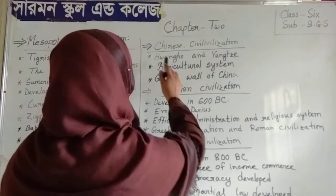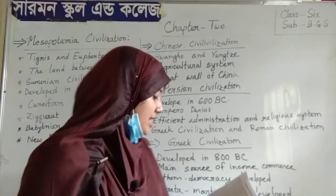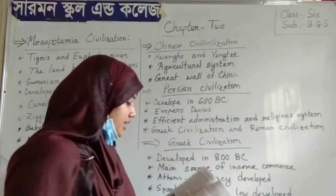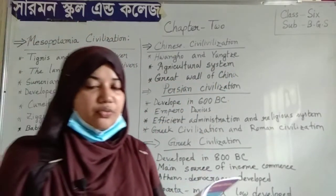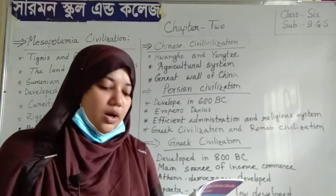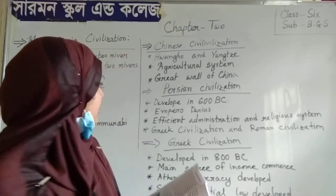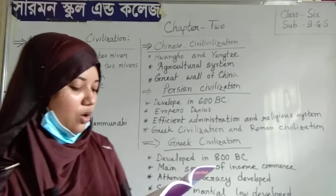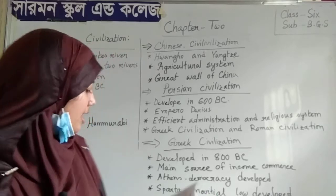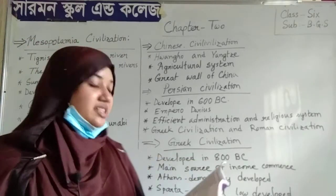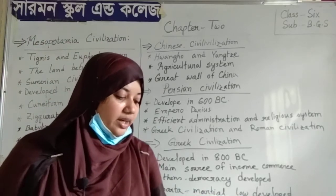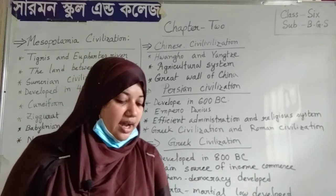We are moving to the next topic, which is Chinese civilization. Chinese civilization developed on the banks of the rivers named Huang He and Yangtze in 2000 BC. Several dynasties of China played a special role in developing this civilization. The Chinese developed a strong agricultural system, and they were expert at making bronze sculptures and artifacts.